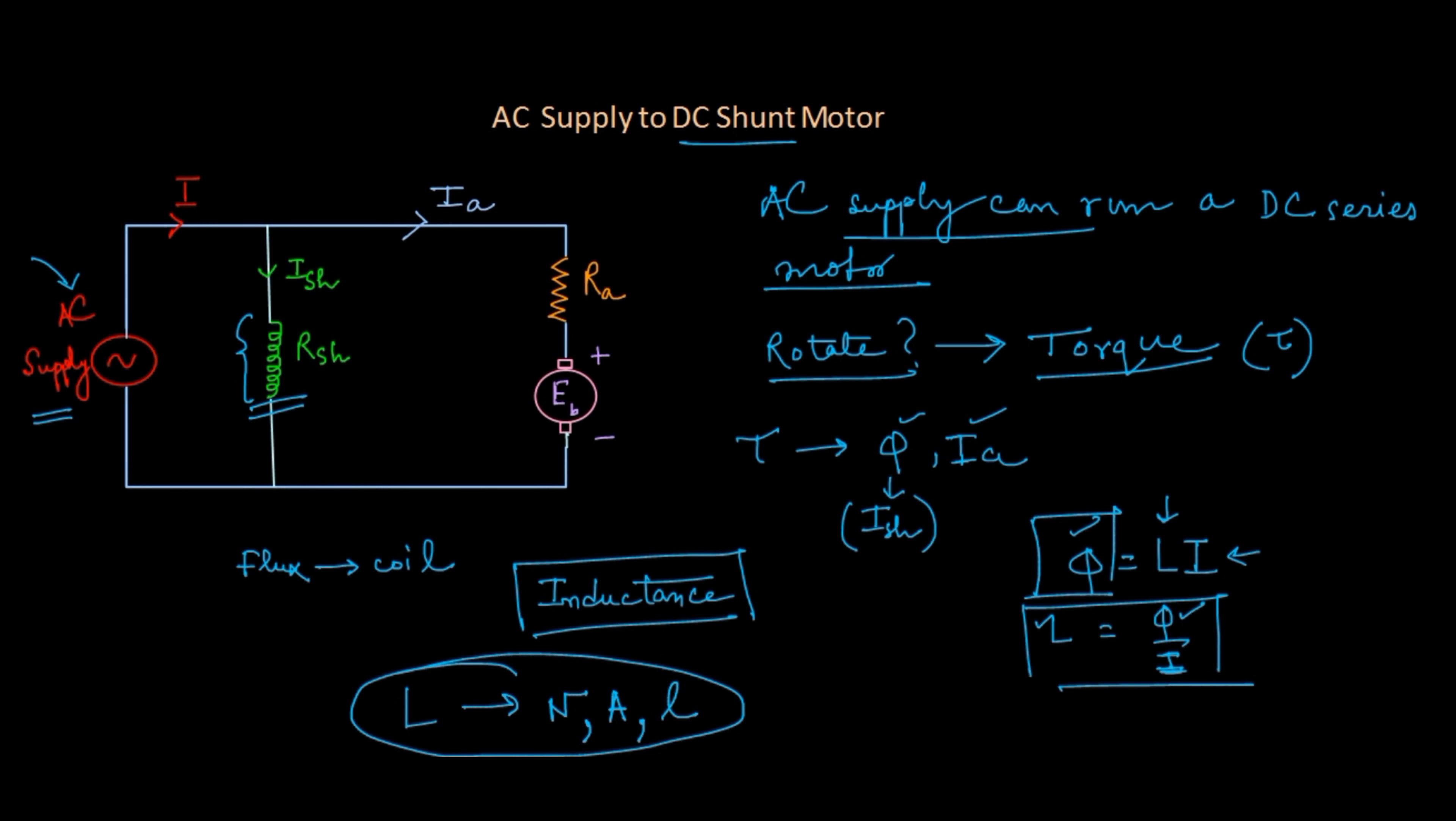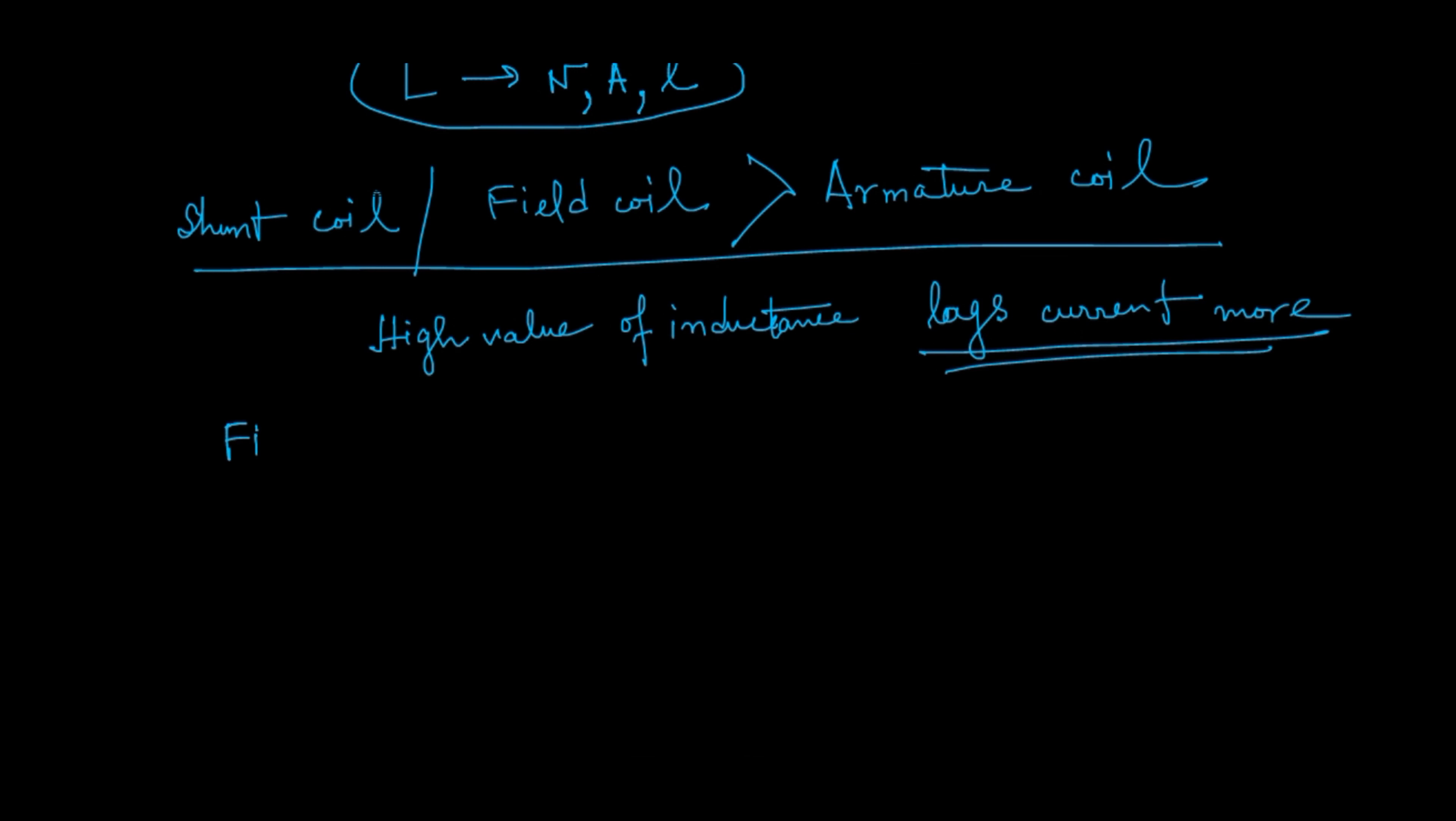Since the inductance of the field coil is much greater than the inductance of the armature, then automatically your field current, that means ish, will lag behind armature current I-a.